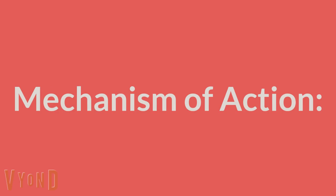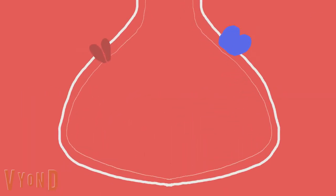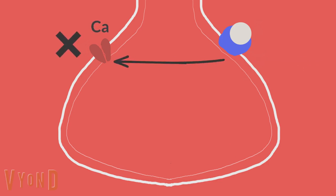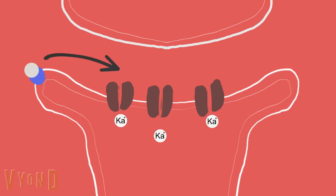Opioids act on opioid receptors on the neuronal signaling brain. When they bind to opioid receptors on the presynaptic neuron, they inhibit calcium conductance, which inhibits the release of neurotransmitters, which finally inhibits the transmission of pain signals to the brain. When they act on the post-synaptic neuron, they open potassium channels, increasing the movement of potassium out of neurons, which prevents neurons from firing an action potential.